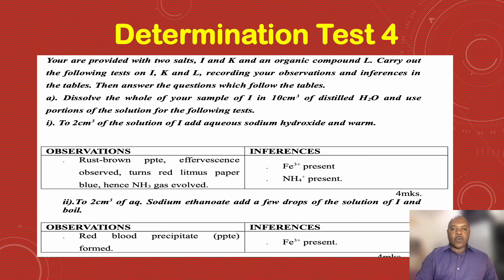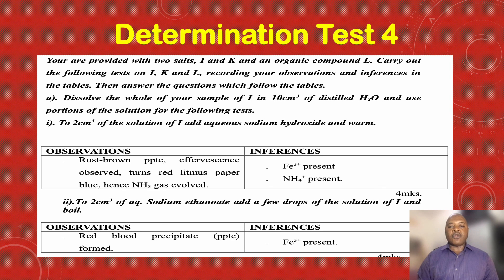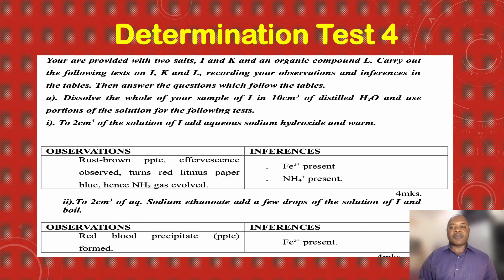That is how you carry out your identification test, or what we call a determination test. When you do all this, you identify the ions — the cations or the anions that are there — and try to identify the functional groups, then draw your conclusions before finally identifying the different components of the salt or the functional groups present.